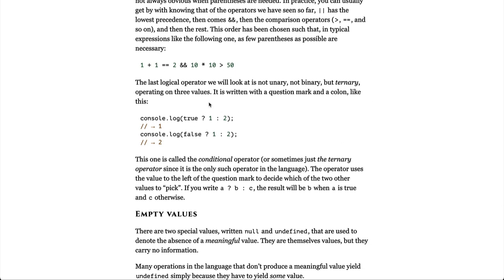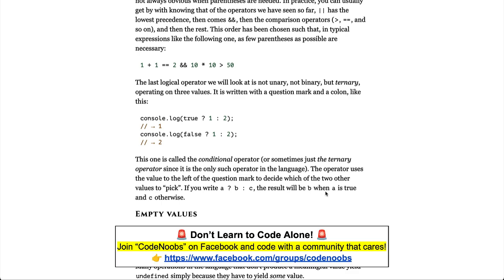The last logical operator we will look at is not unary, not binary, but ternary, operating on three values. It is written with a question mark and a colon like this. This one is called the conditional operator, or sometimes just the ternary operator, since it is the only such operator in the language. The operator uses the value to the left of the question mark to decide which of the two other values to pick. If you write a question mark b colon c, the result will be b when a is true and c otherwise.